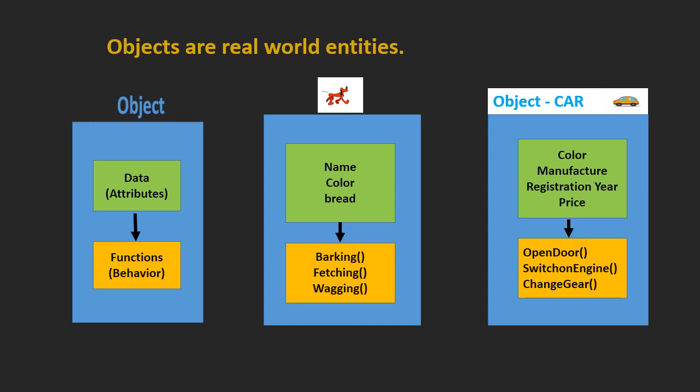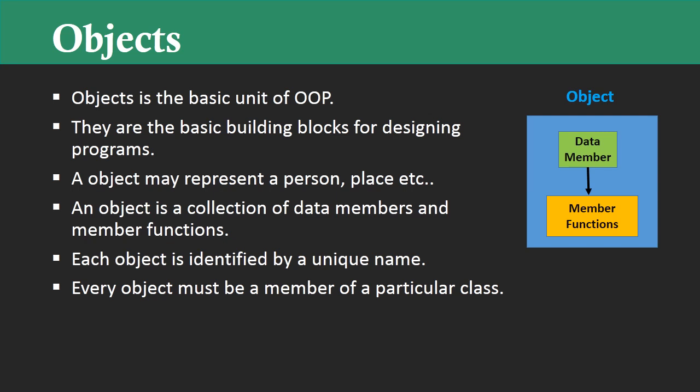So in the real world, each and every object will have two characteristics: first is data, and another one is function. The key points regarding objects: the first one is that object is a basic unit of object-oriented programming. Next, they are the basic building blocks for designing programs — if you want to design any program using an object-oriented language, you need to make use of objects. Next, objects may represent anything in the real world — a person, place, table, book, pen, etc.